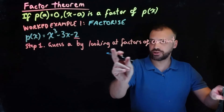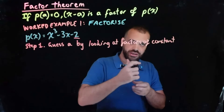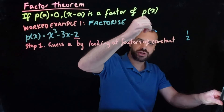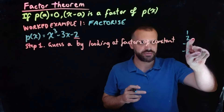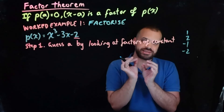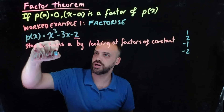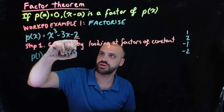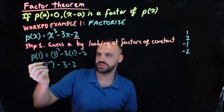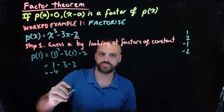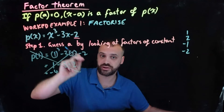Step 1 is to guess a by looking at factors of the constant. So negative 2: the factors of negative 2 are 1, 2, negative 1, and negative 2. We could sub any of these four into p of x and see if it's equal to 0. Let's start at the top — subbing in p of 1: 1 cubed minus 3 times 1 minus 2 gives us 1 minus 3 minus 2, which is minus 4. That doesn't work, so x minus 1 is not a factor.